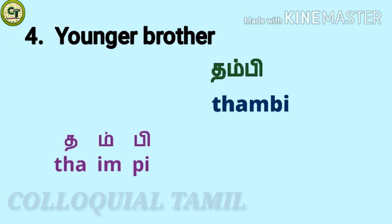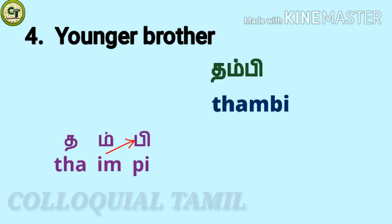For younger brother: thambi. The short vowel, consonant 'p', short vowel. While speaking, 'p' may also sound as 'b' in some words — together: thambi.